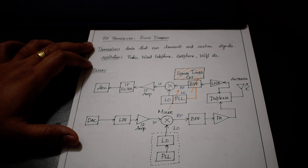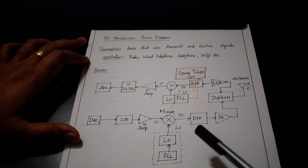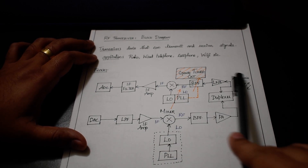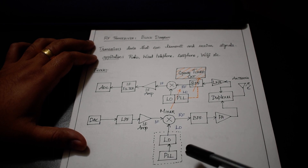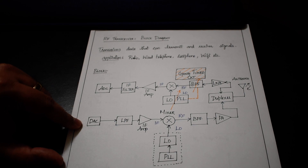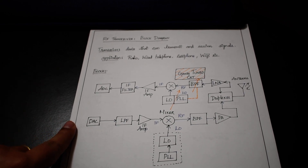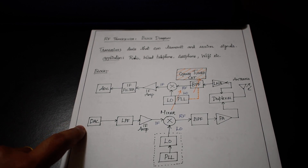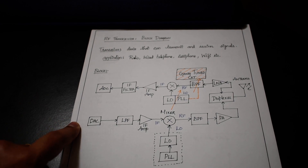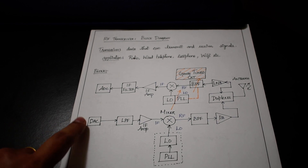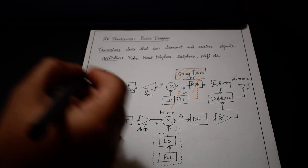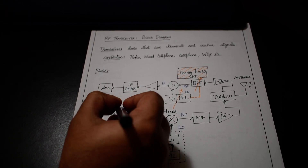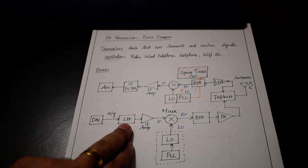Now let's get into the actual block diagram. The part at the top is the receiver and the part at the bottom is the transmitter. We have a digital signal which is modulated — we'll discuss digital modulations in the next videos. For now, let's take into account that we are giving a digitally modulated signal as the input to the DAC. The DAC, or digital-to-analog converter, converts the digital signal into analog signals.